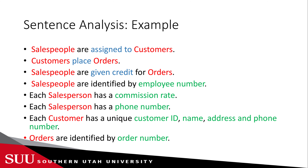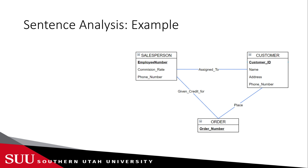Extracting all entities and attributes from this example gives us the color-coded set of sentences. Each entity appears only once — although I highlighted 'customers' about three times and 'salespeople' about five times, each one appears only once in the ERD. I highlighted them in every sentence just to relate them to the corresponding relationships and attributes.